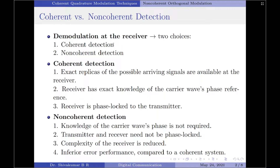To perform demodulation at the receiver, we have two choices. The first one is coherent detection, which we have been discussing in all our previous topics — that is, binary PSK, binary FSK, and QPSK as well. The second choice is non-coherent detection. In coherent detection, exact replicas of the possible arriving signals are available at the receiver.